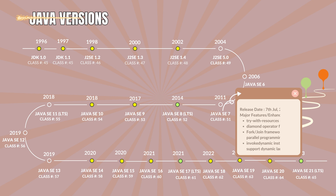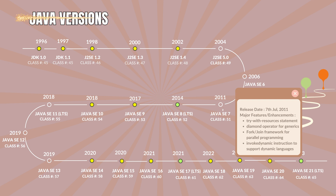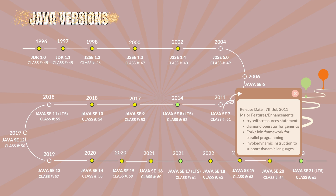Java 7.0 with the class file version 51. It was codenamed as Dolphin. It was released on 7th July 2011. The major features and enhancements are the introduction of Project Coin features, including Try-with-Resources, improved type inference, and the Diamond Operator. Added the ForkJoin Framework for parallel programming. Introduced the InvokeDynamic instruction to support dynamic languages.